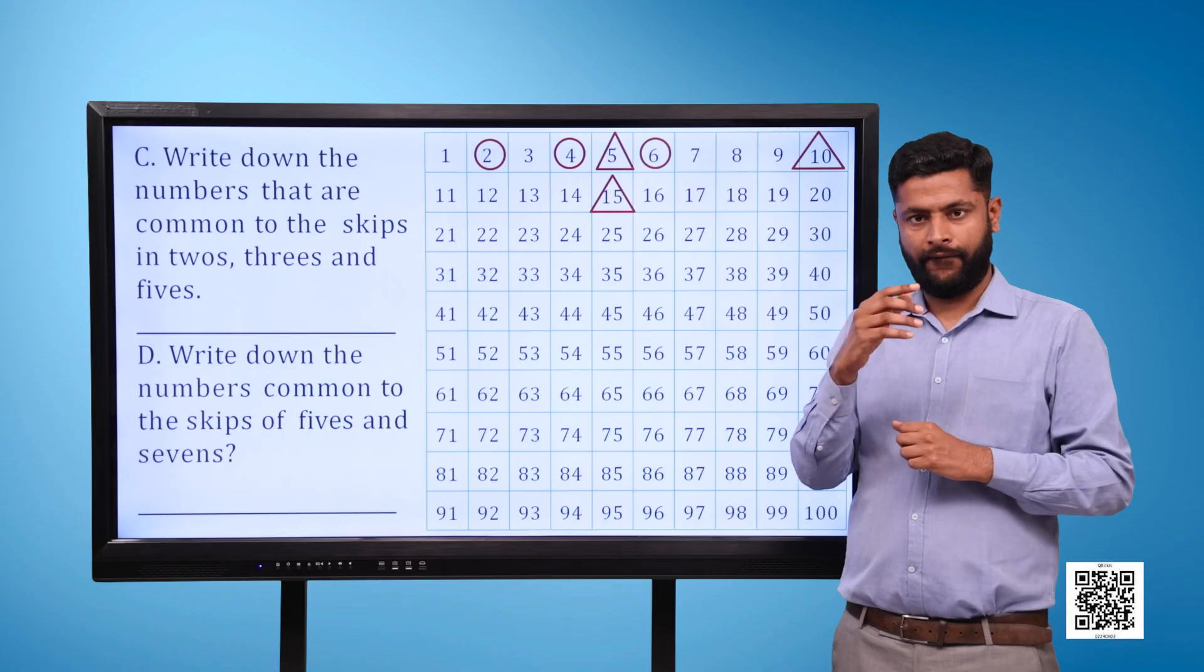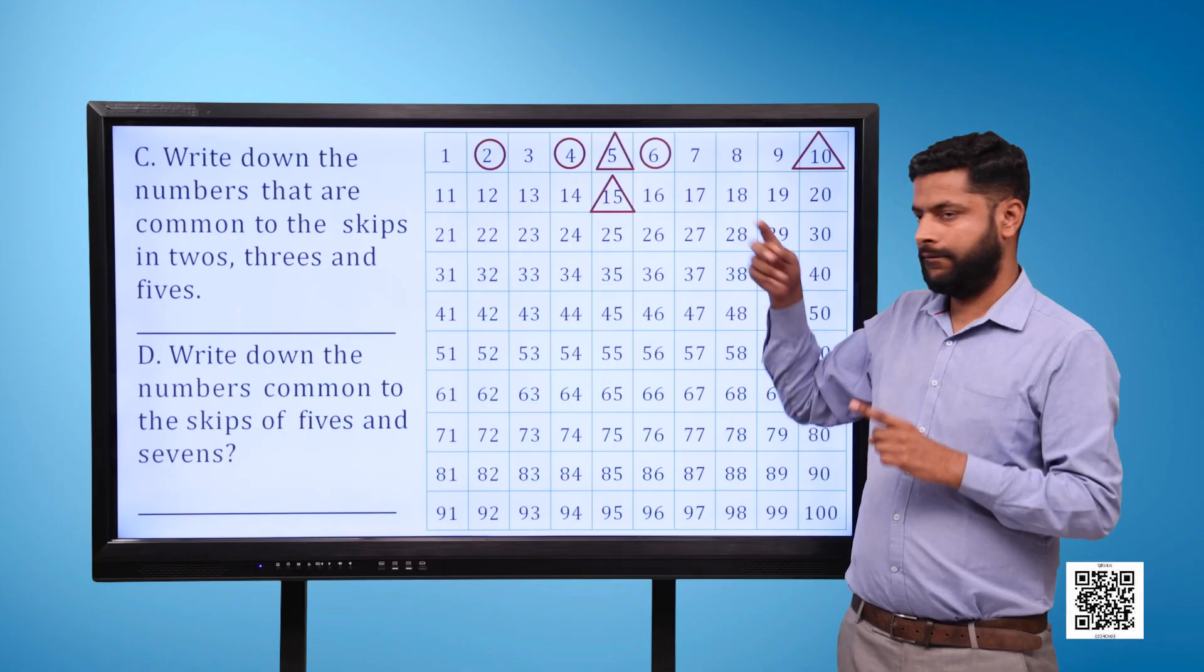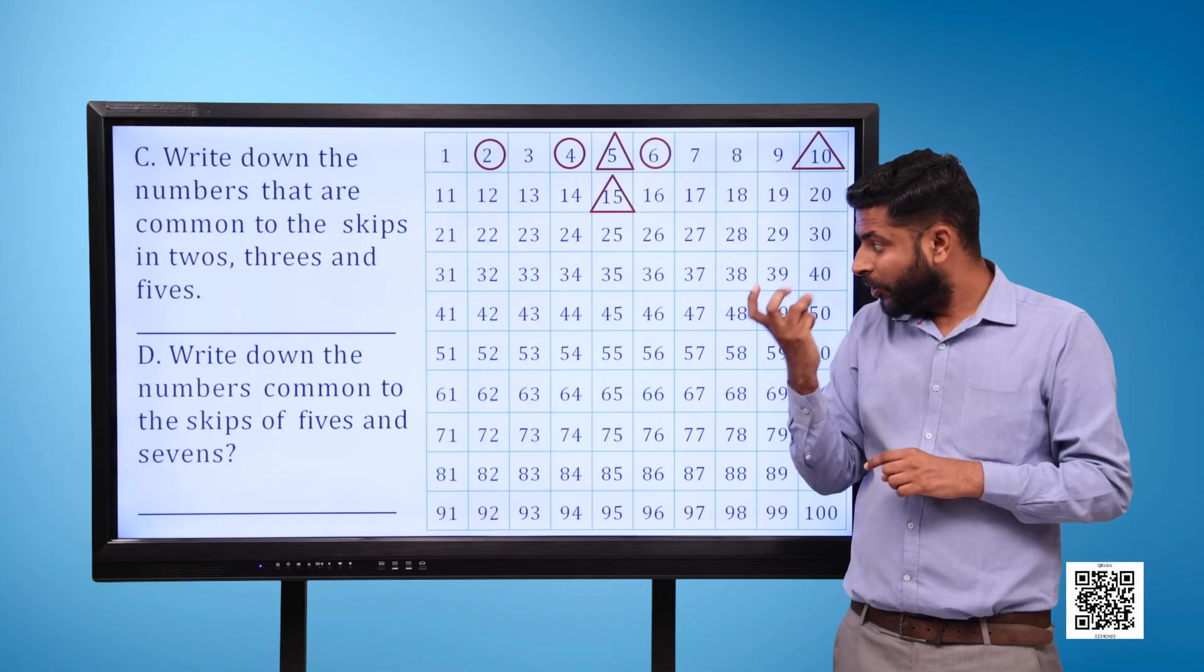Write down the numbers common to the skips of 5s and 7s.